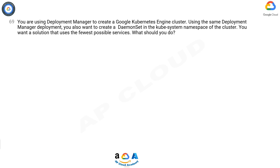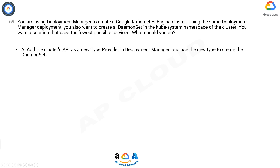You are using Deployment Manager to create a Google Kubernetes Engine cluster. Using the same Deployment Manager deployment, you also want to create a DaemonSet in the kube-system namespace of the cluster. You want a solution that uses the fewest possible services. What should you do? Option A: Add the cluster's API as a new type provider in Deployment Manager and use the new type to create the DaemonSet.